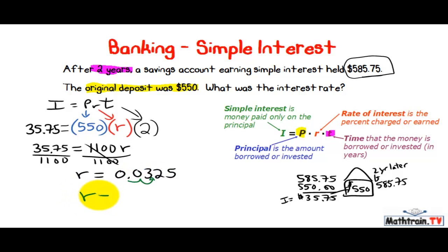One, two. And we have R equals 3.25%. Three and twenty-five hundredths. Three and a quarter percent.